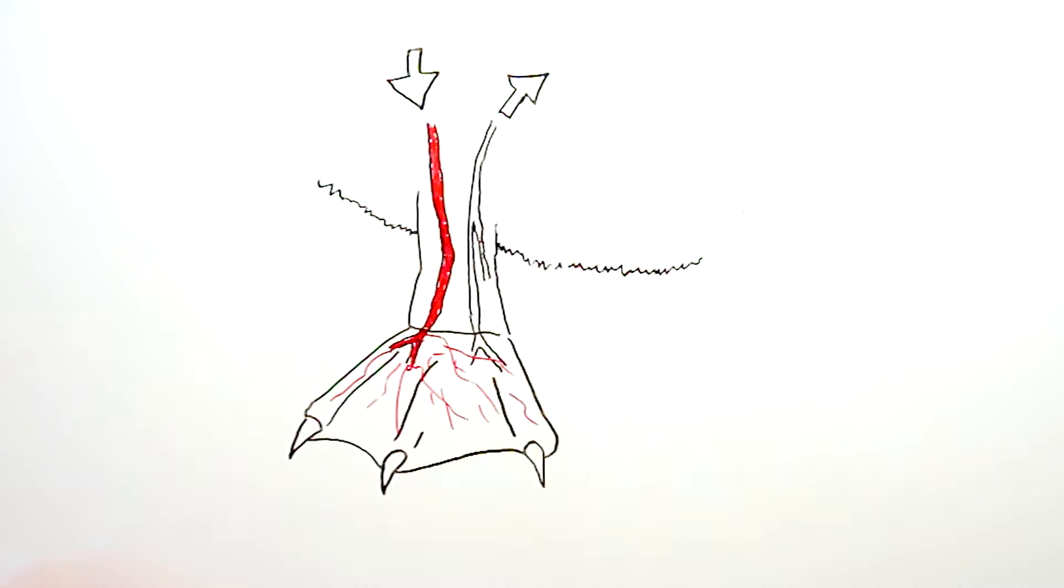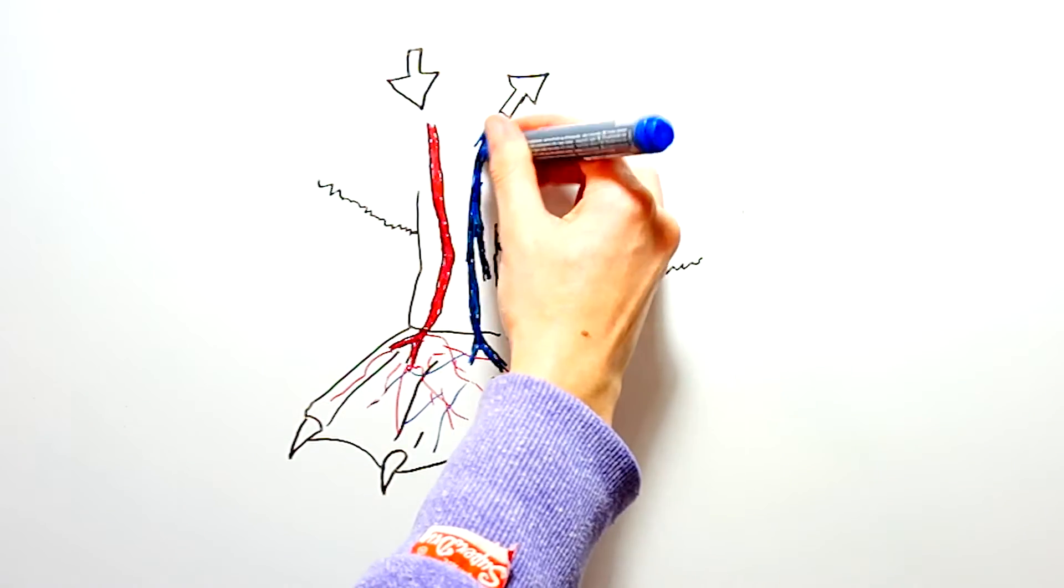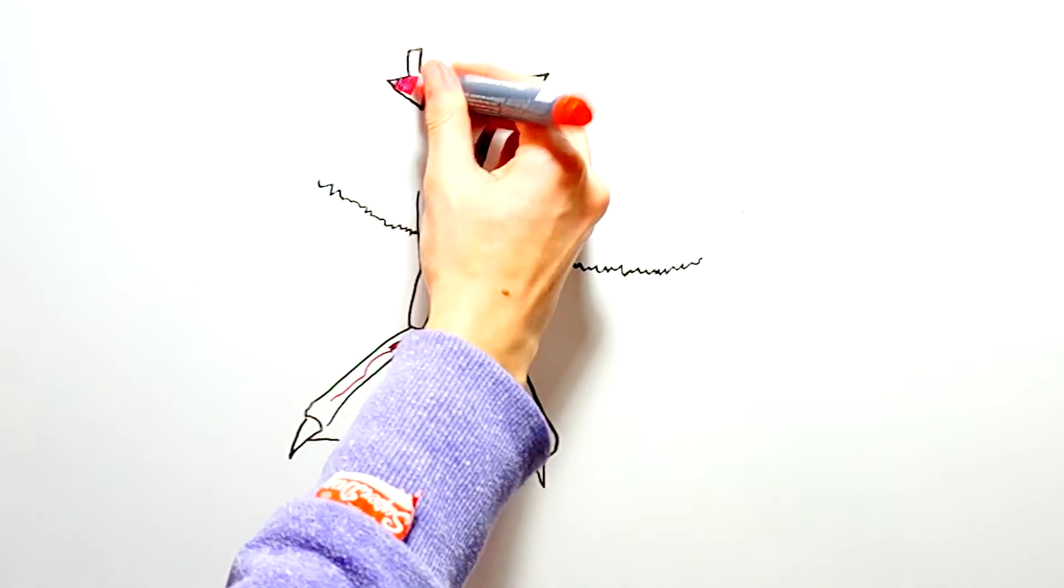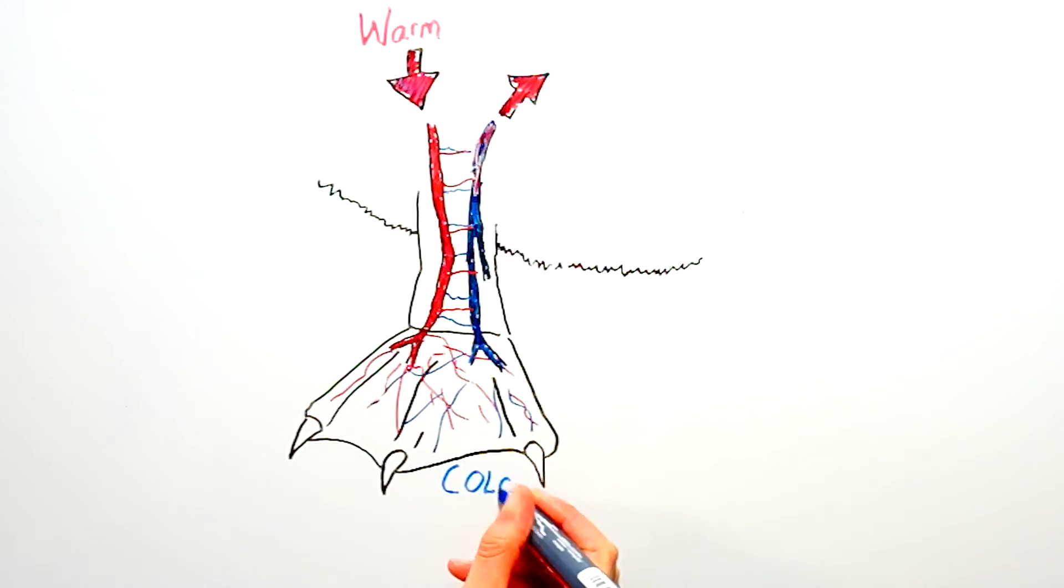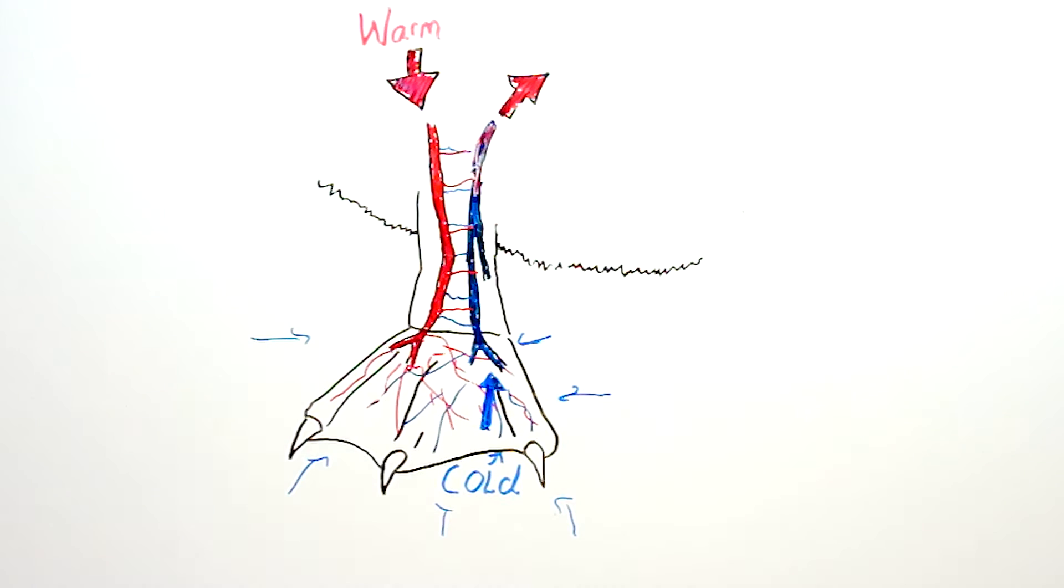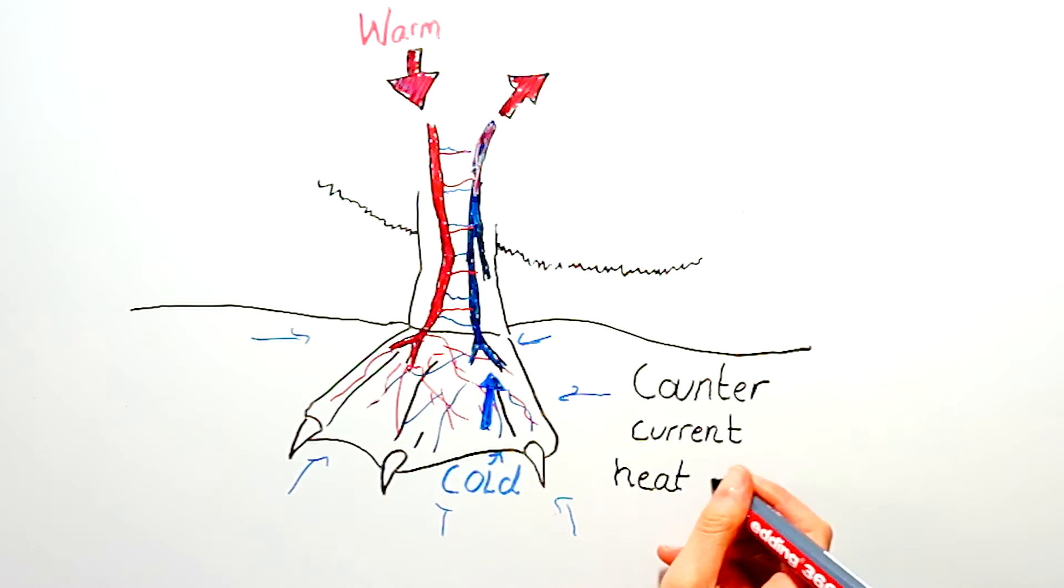Warmth from the outgoing arteries heats up the blood from the incoming veins, and the incoming veins cool down the blood in the outgoing arteries. This helps the penguin conserve heat in the body, rather than losing it to the outside air through their feet.